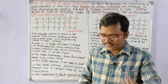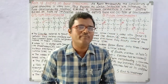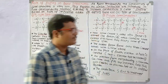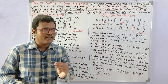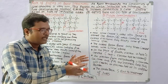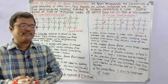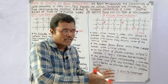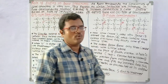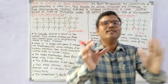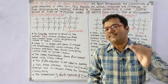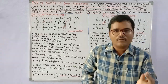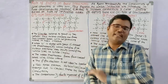So, what is a semiconductor? Semiconductors are the materials that have conductance in between conductors and insulators. The best examples for semiconducting materials are silicon as well as germanium.